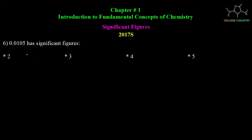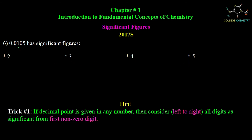Question number 6: 0.0105 has how many significant figures? Options are 2, 3, 4, or 5. Since a decimal point is present, we consider left to right from the first non-zero digit. The first non-zero digit is 1, and there are a total of 3 significant digits. The correct option is 3 significant figures.